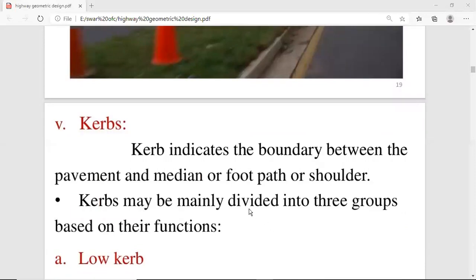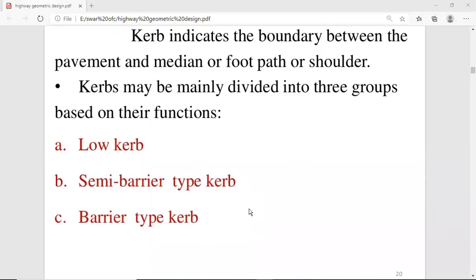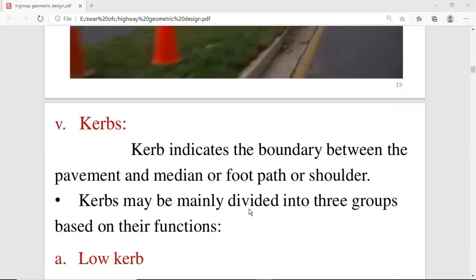Next is the kerb. What is the kerb? The kerb indicates the boundary between the pavement and the median, the footpath and the shoulder. The kerb may be mainly divided into 3 groups: Low kerb, semi-barrier type kerb and barrier type kerb. What is the boundary that is given between the pavement and median, pavement and footpath, pavement and shoulder.